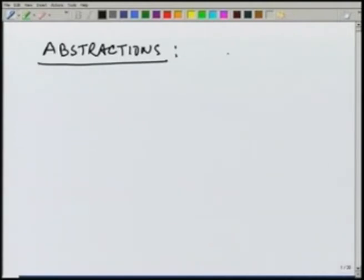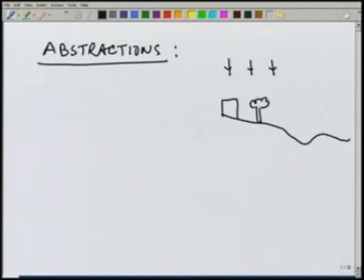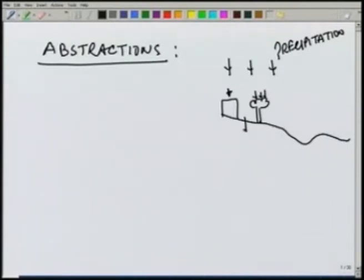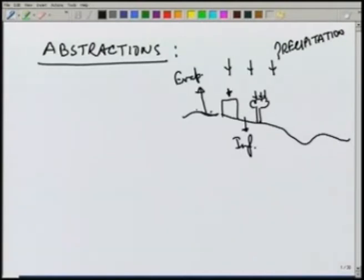If we look at the precipitation over a certain area where there may be trees or buildings, then out of total precipitation, part of it will be detained on the rooftop or on the tree leaves. Part of it will infiltrate, and part of it will evaporate once it reaches the surface.